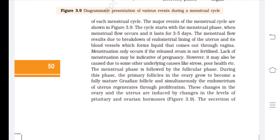The cycle starts with the menstrual phase, when menstrual flow occurs, lasting 3 to 5 days. The menstrual flow results from breakdown of the endometrial lining of the uterus and its blood vessels, forming liquid that comes out through the vagina. Menstruation only occurs if the released ovum is not fertilized; lack of menstruation may indicate pregnancy, or may be caused by stress, poor health, etc.